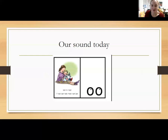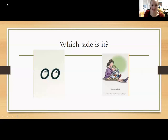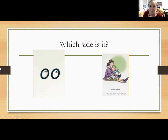So when you see that side you're going to say 'look at a book.' So one of them is going to be the U sound and the other one will be 'look at a book.' So keep your eyes peeled and let's get started.